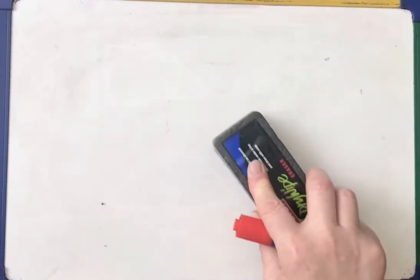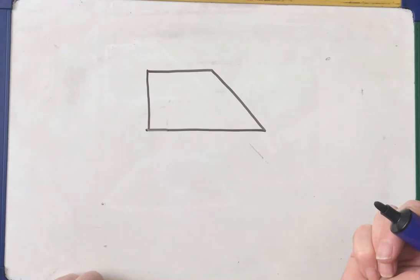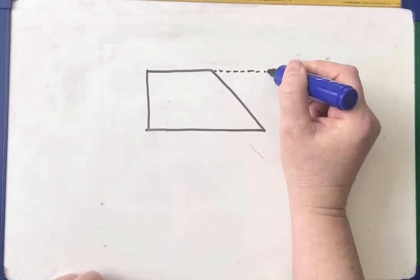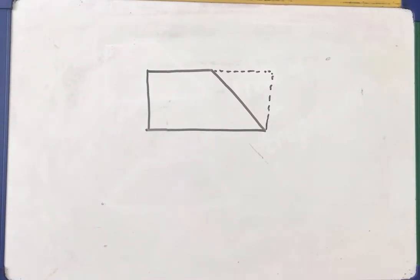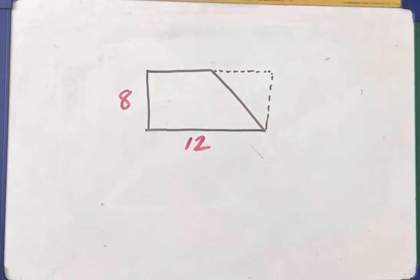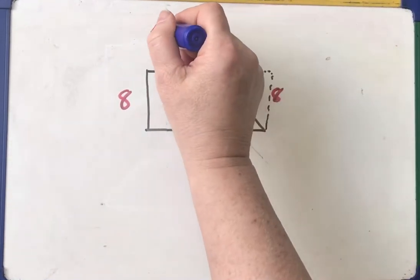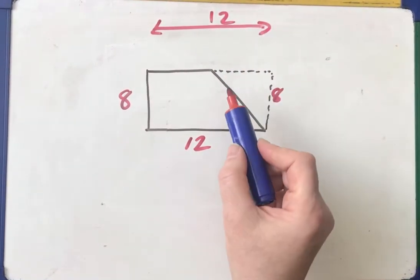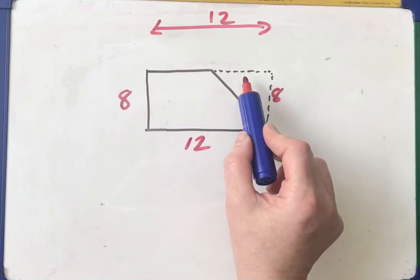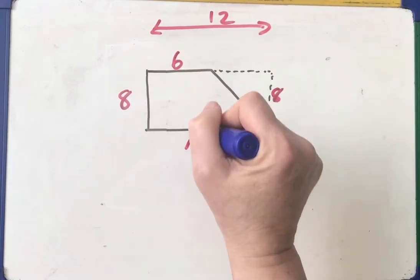First of all, if you've watched the video on right-angled triangles and the video on rectangles, you'll know that you can pretend that the trapezium started life as a rectangle. If that length is 12 and that's 8, we know that because if it was a rectangle — opposite sides are equal and parallel — that side would be 8 as well. The whole thing from there to there is 12, but you'd need to know either that length or that one in order to work out the rectangle and subtract the triangle. So if I call that 6 centimetres.